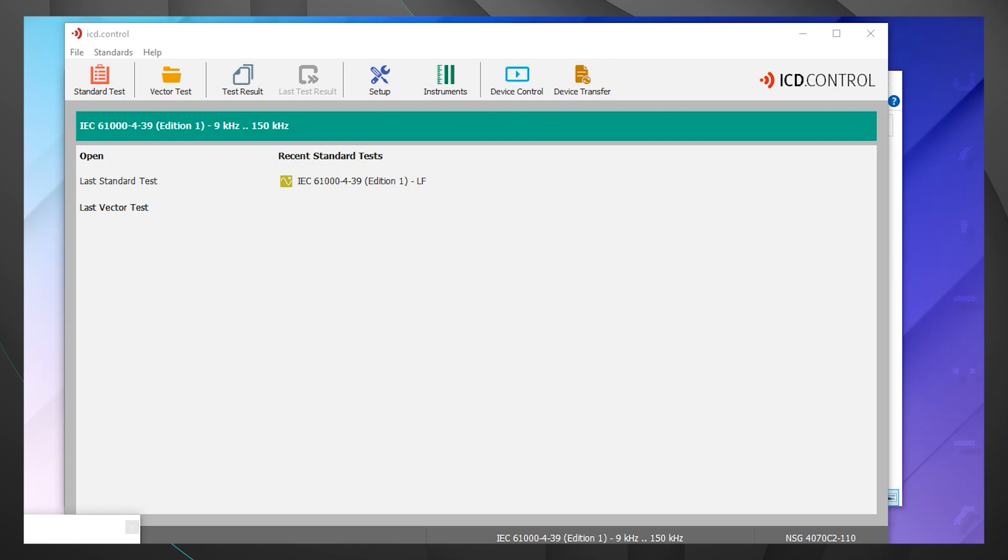Here is the starting menu for the ICD.Control software. You can see right now we have the main display open. We have the open on the left where we have last standard test and last vector test. And then we have our recent standard test where we have IEC 61000-4-39 already showing. But let's go to standard test in the upper left corner and see what's available there.